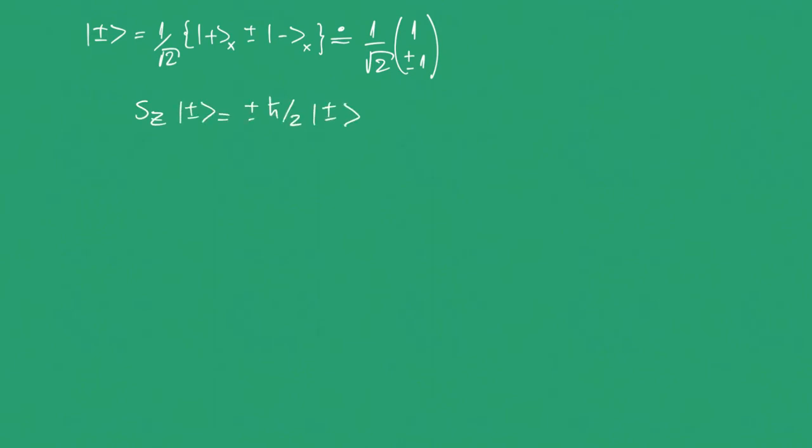And now we just have to assume an operator SZ represented by this matrix. For spin-up, we can write this eigenvalue equation, and we can plug all the values we already know here. SZ is represented by this matrix. The ket plus is given by this.